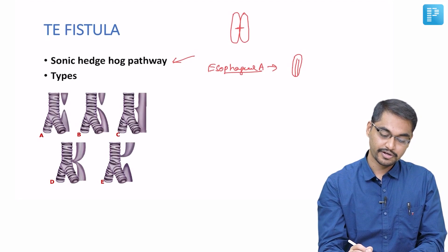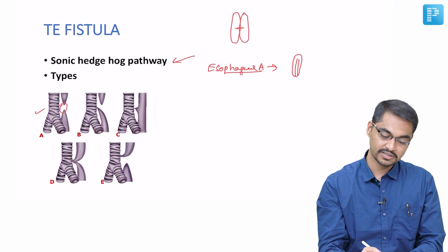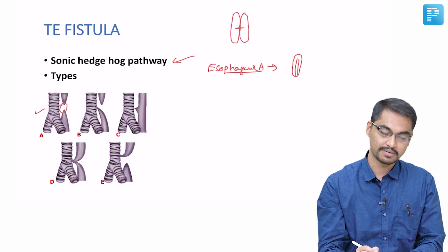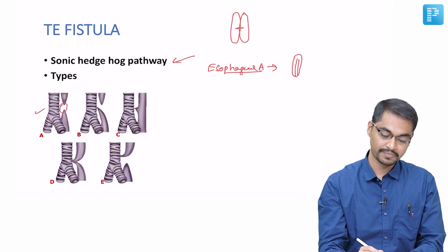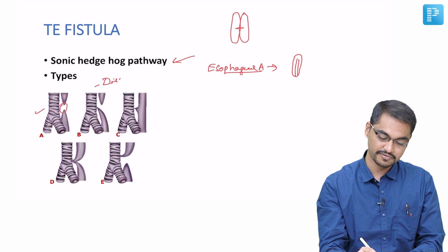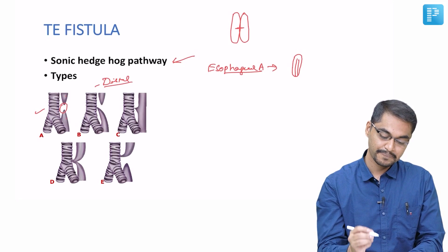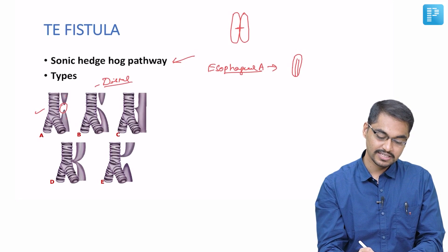Coming to the types of tracheoesophageal fistula. In the first type, there is an atretic segment in the middle of the esophagus resulting in a proximal blind pouch and a distal blind pouch. The second type is also known as the distal type of tracheoesophageal fistula, wherein the distal atretic segment of the esophagus communicates with the trachea, whereas the proximal atretic segment is a blind one.